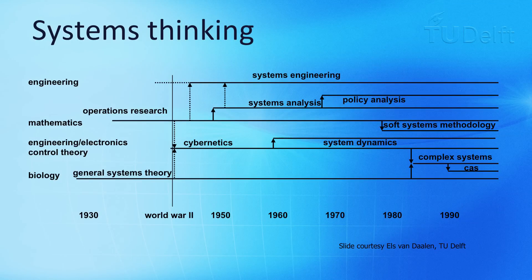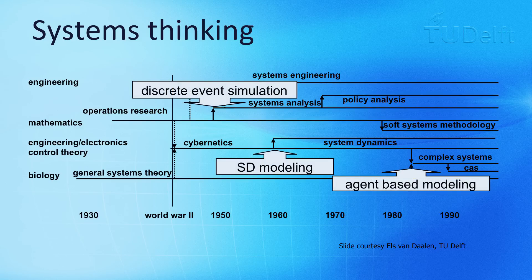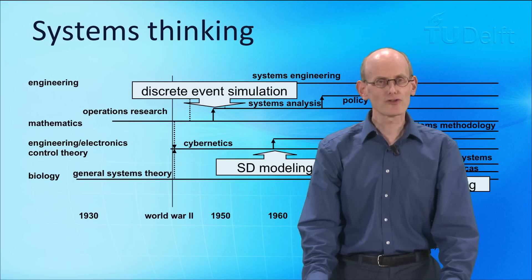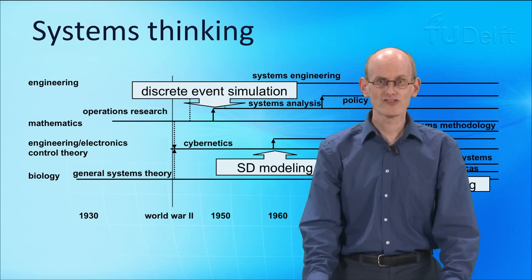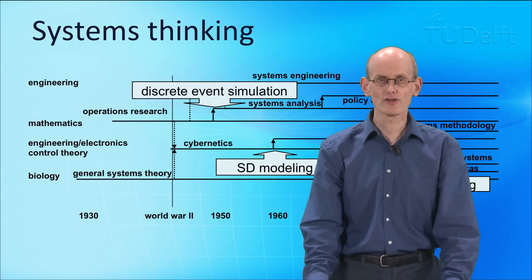If we look historically, discrete event simulation started already pretty early as one of the modeling techniques. Around the 1950s the first discrete event simulation models were built, at that time especially for military simulations, transportation simulations and energy simulations. Later, continuous simulations and agent-based simulations joined the set of simulation studies that can be executed for infrastructures.